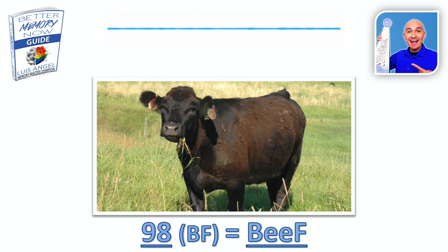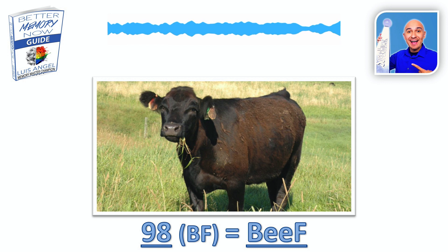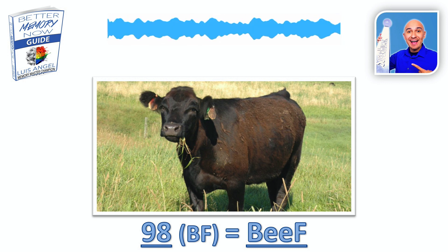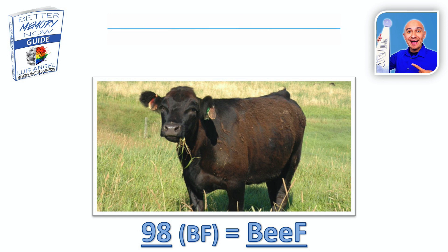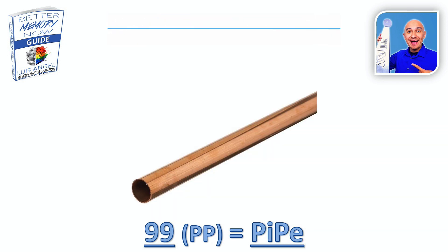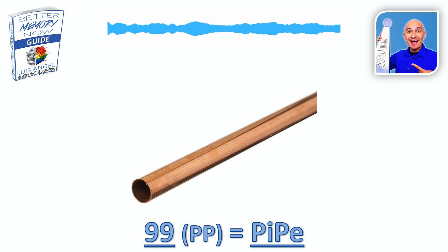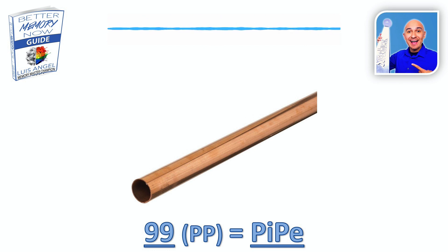98: we have the B sound and the F sound. Throw in some vowels and we get beef. Beef for 98. You can picture a steak, a hamburger — I like to picture a whole cow for 98. 98 is beef cow. 99: nine is the P sound, the other nine is also the P sound. Throw some vowels in and you get pipe. Whatever you want to picture for pipe, use that image and association for 99. 99 is pipe.